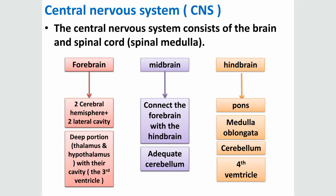The central nervous system consists of two parts: the brain and the spinal cord. The brain is divided into three parts: the forebrain, the midbrain, and the hindbrain. The forebrain is composed of the two cerebral hemispheres with their two lateral cavities and the third cavity, and its surrounding tissue called the diencephalon. The midbrain connects the forebrain with the hindbrain.